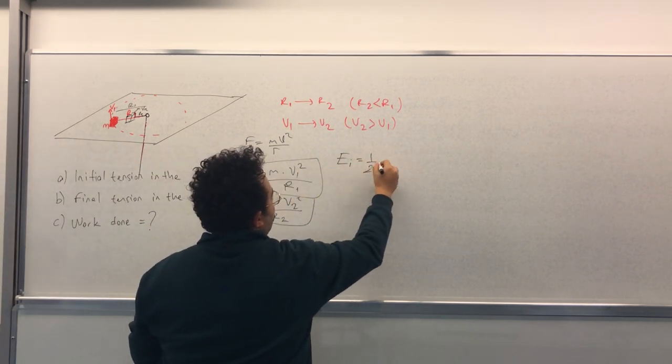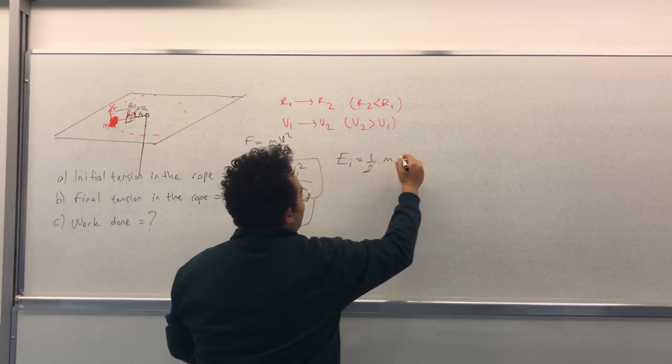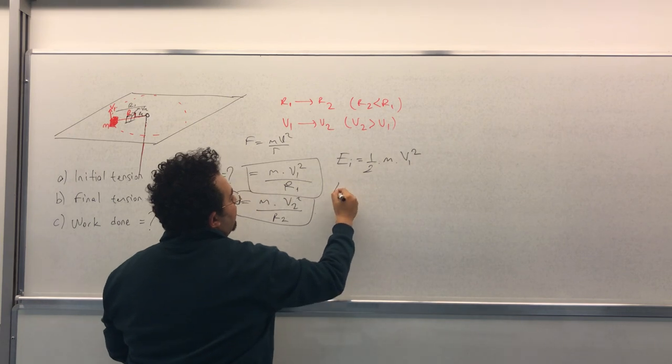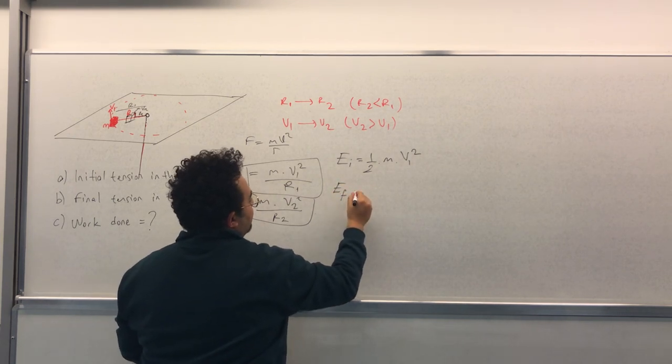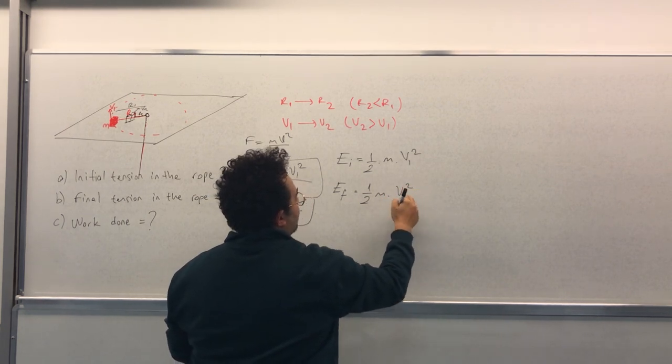One half m and square of v1, half m and square of... the final equals to one half m v2 squared.